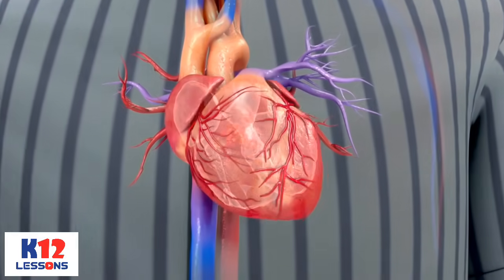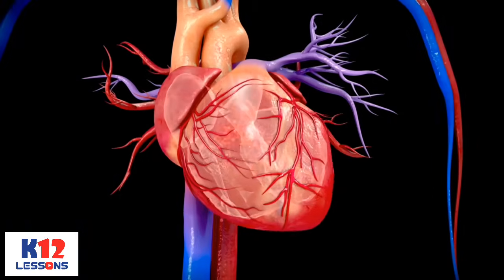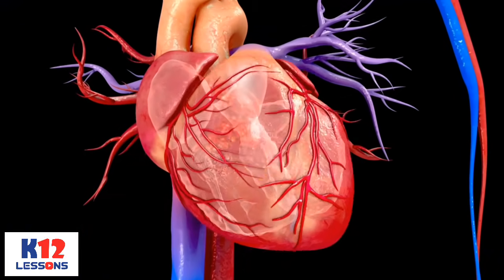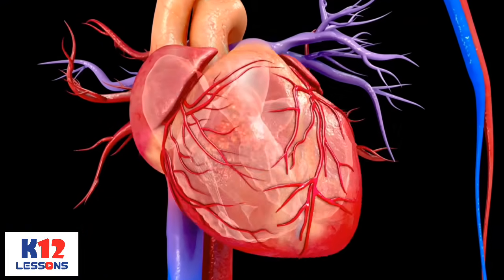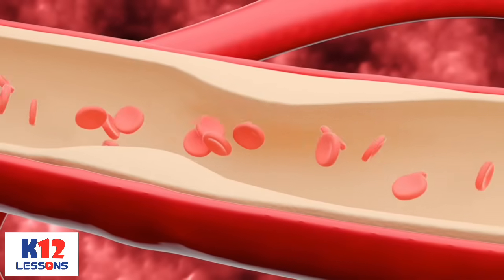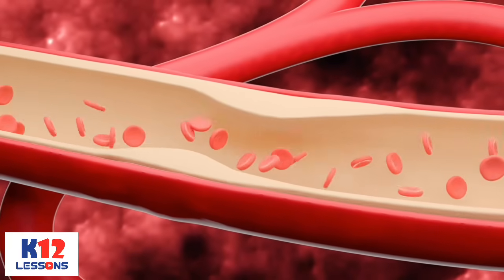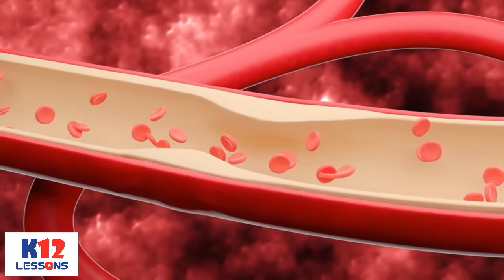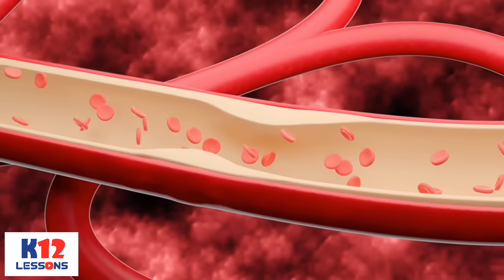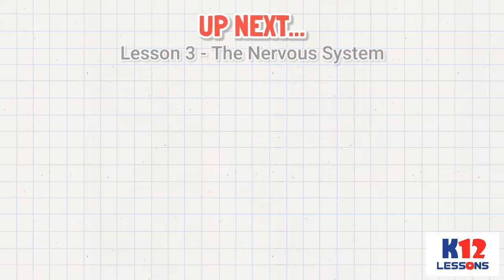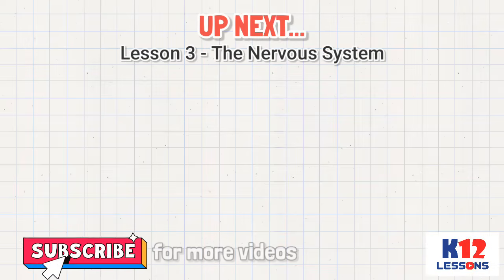The circulatory system is a good example of how body systems interact with each other to keep the body alive. Each organ of the system works together to circulate blood throughout the body. Thanks for watching!